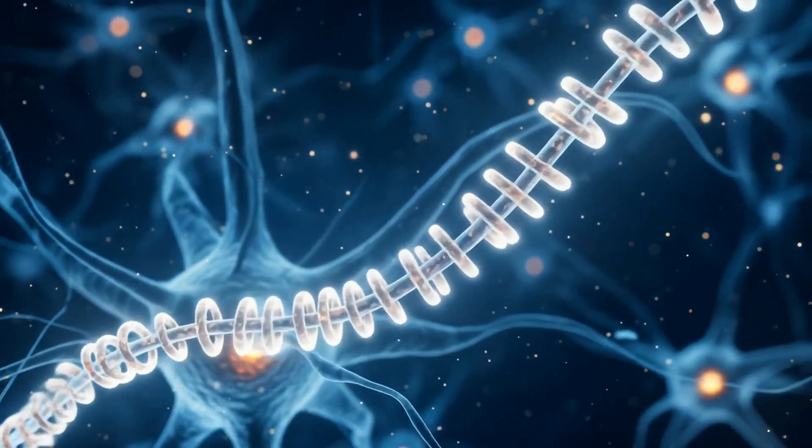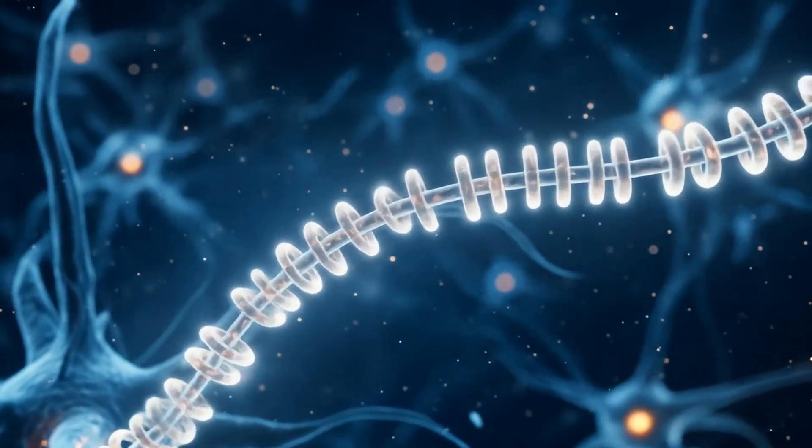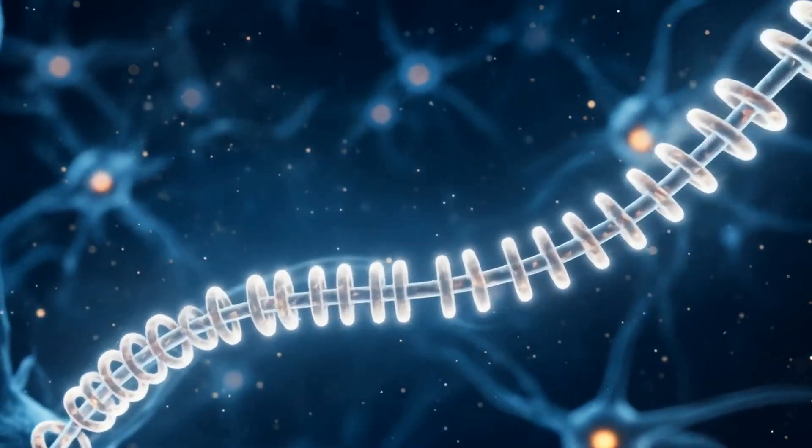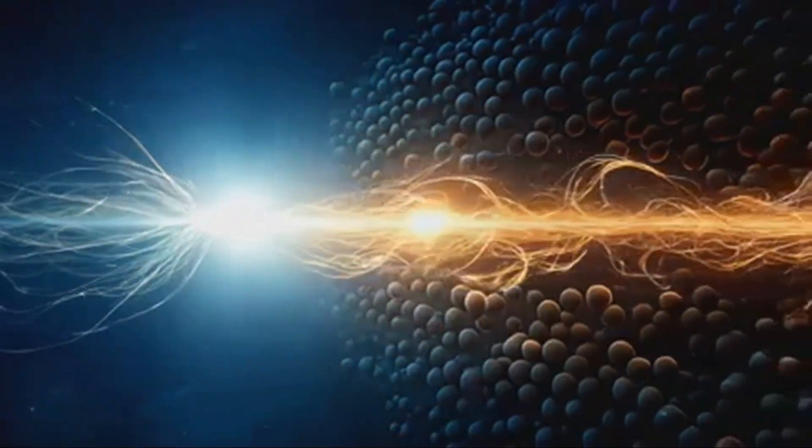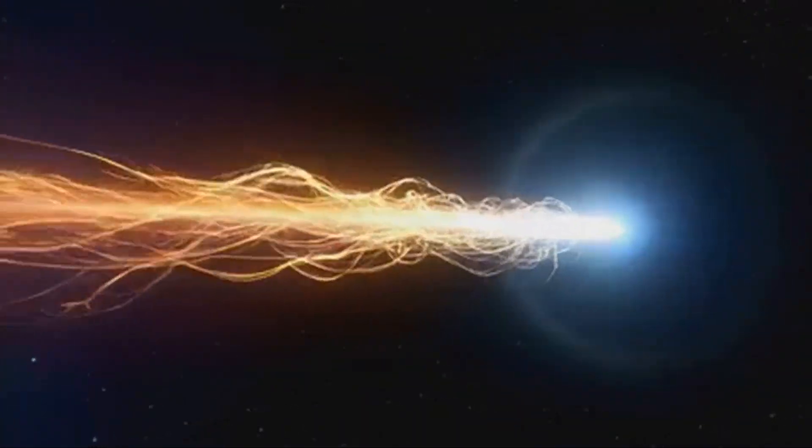When your microtubules align, they reduce quantum noise. The wobbles in the spin and coherence rises. This is consciousness, the alignment of your biological qubits with the cosmic broadcast of Hawking radiation.